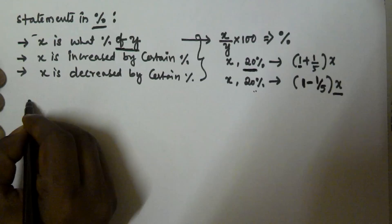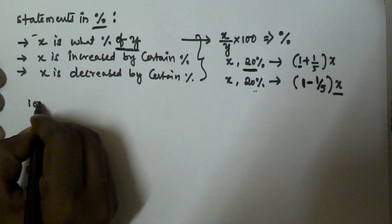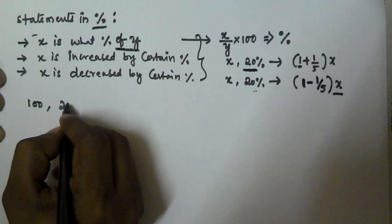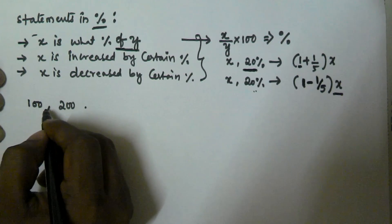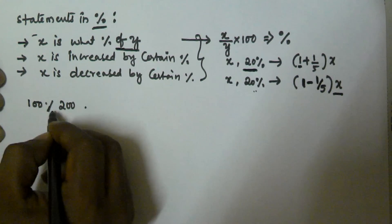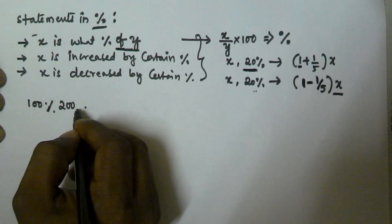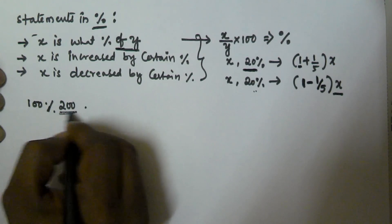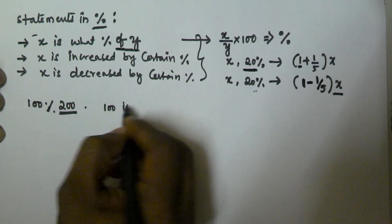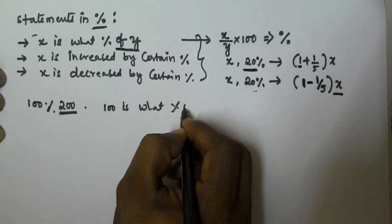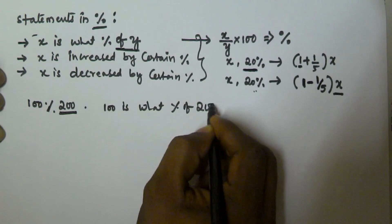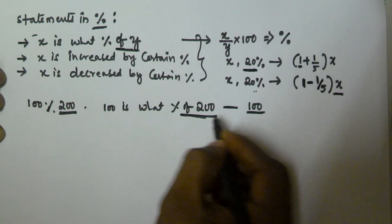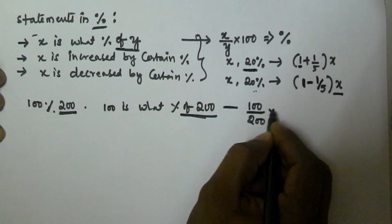Let's see an example: we have two values, 100 and 200. What percentage is 100 of 200? The percentage value is given by 100 divided by 200 (since 200 is the denominator), multiplied by 100, which gives 50%.